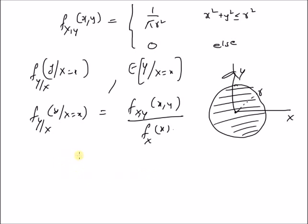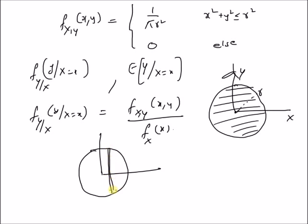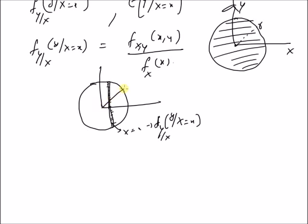Our goal is to find the conditional PDF across the strip given by a vertical line at a fixed value of X. That is, we want to find the PDF of Y across this line for a given value X = x, which is basically the conditional PDF along that vertical strip. The radius is R.